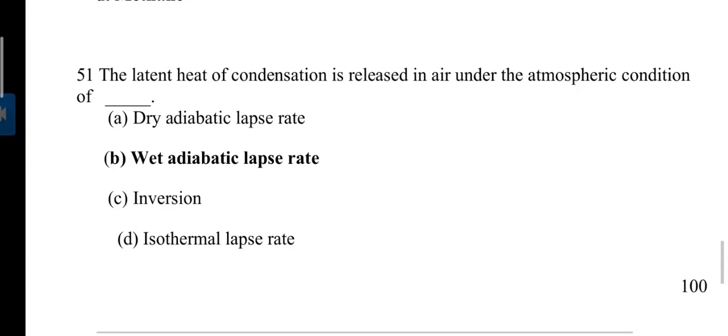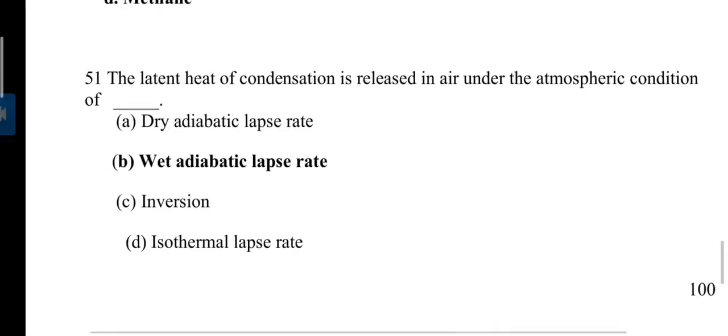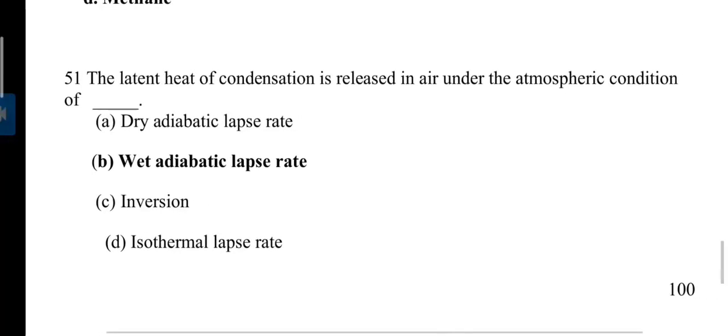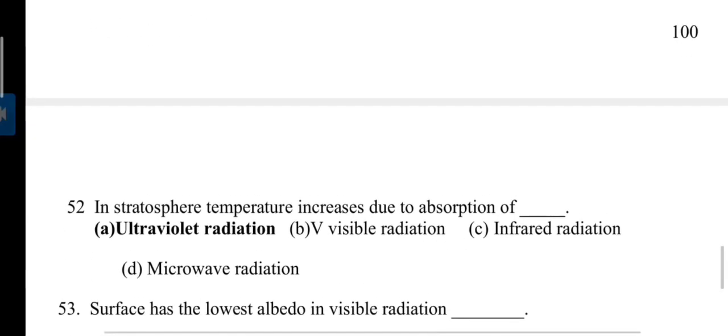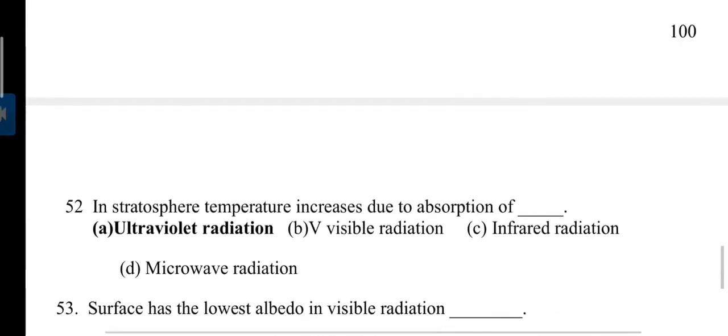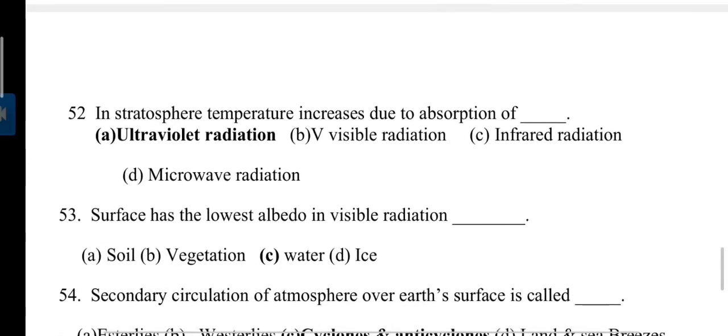The latent heat of condensation is released in air under the atmospheric condition of wet adiabatic lapse rate. Lapse rate is a vertical temperature decrease gradient. In stratosphere, temperature increases due to absorption of UV or ultraviolet radiation. Stratosphere has the highest temperature of atmosphere and also has the ozone layer.